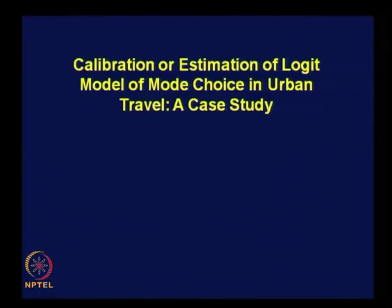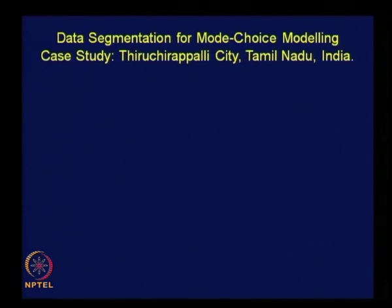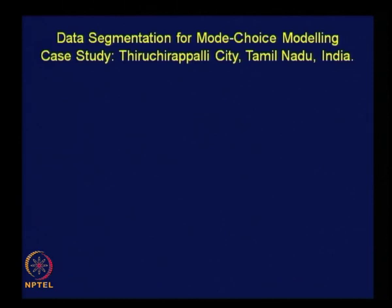Let us proceed to see how to calibrate the logit model of mode choice when there are several alternatives for travel. When we do mode choice analysis, it is necessary that the data is segmented. We collect information about total trips made per day by residents in an urban area, the modes used, and related information. We cannot put all the information together and develop one mode choice model — it may not work.